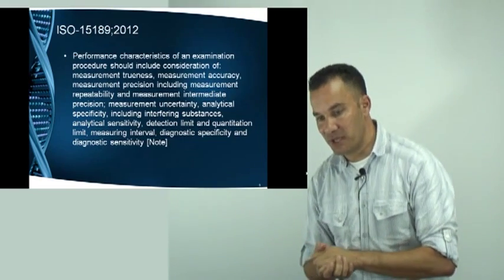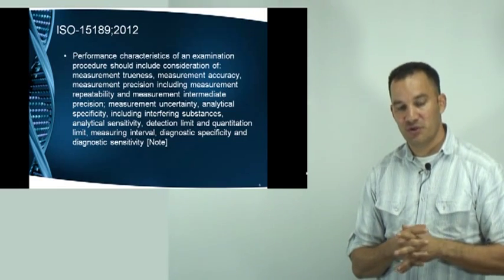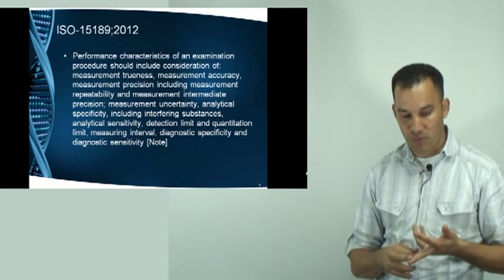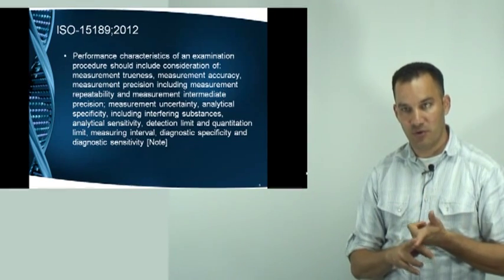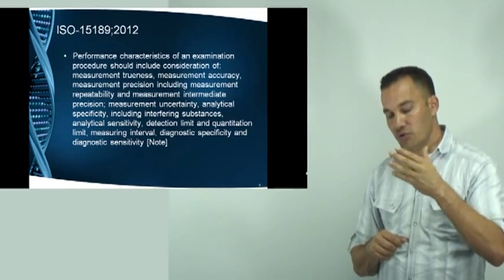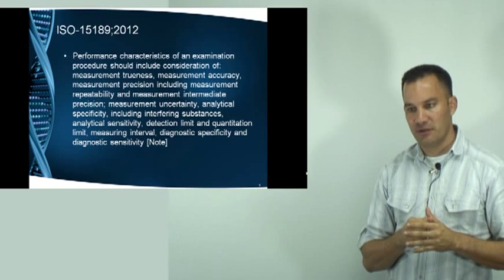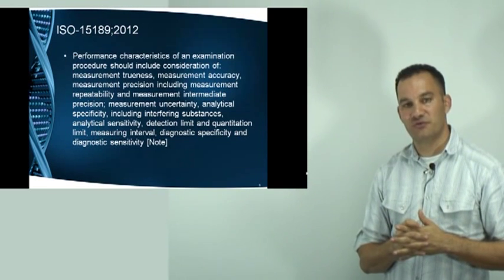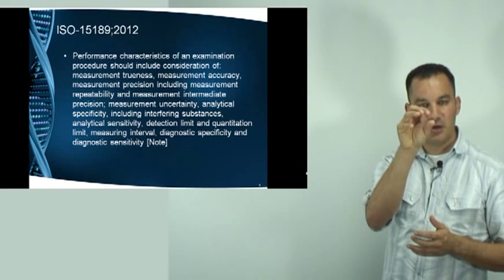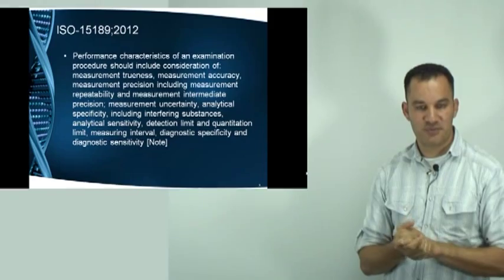That is a large chunk of information, but it is what is needed for the extensive validation of methods — which is required when you modify methods, set up a method entirely by yourself, use methods outside their intended scope, or modify already-validated methods. Usually, for routine validation purposes, when using manufacturer data and instructions without any changes, we use only a certain subset of those criteria in our protocols, experiments, and reporting.